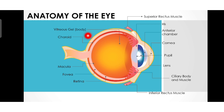The choroid is the middle layer of the eye. It provides blood vessels to the eye and contains pigment granules that prevent reflections of light within the eye. Next, the optic nerve transmits the electrical impulses from the eye to the brain.